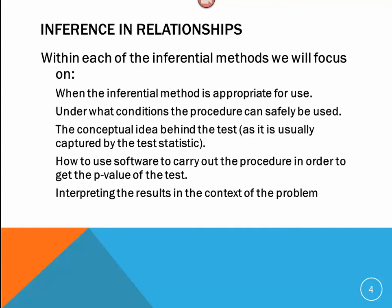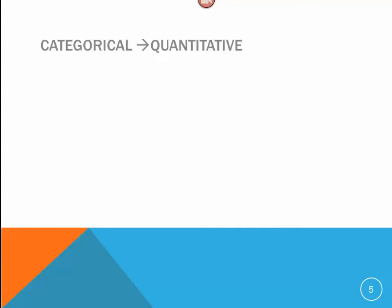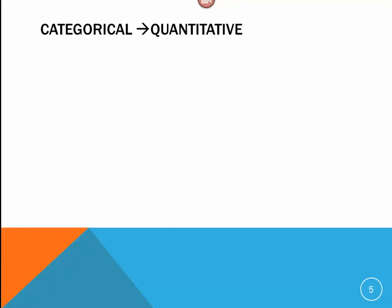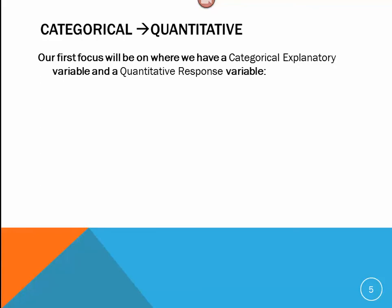So of those methods, we're first, or those scenarios, we're first going to examine the categorical quantitative relationship. This is when we have a categorical, which, remember, tends to be a non-numerical explanatory variable, and a quantitative, which is a counter-measurement response variable.